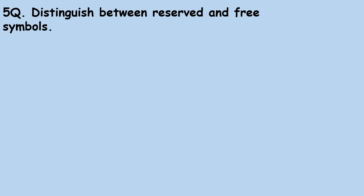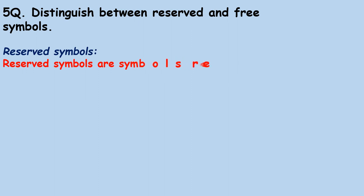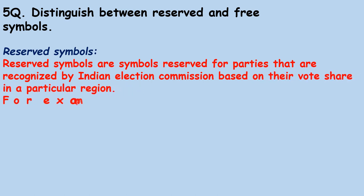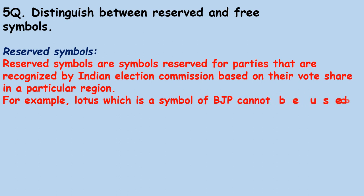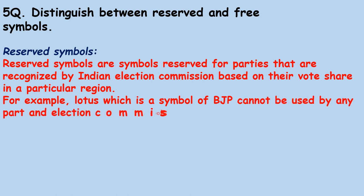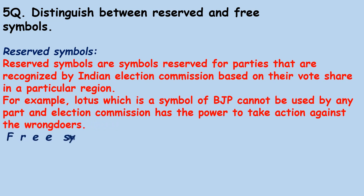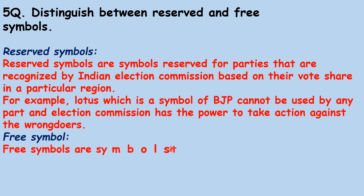Distinguish between reserved and free symbols. Reserved symbols are symbols reserved for parties that are recognized by the Indian Election Commission based on their vote share in a particular region. For example, the Lotus, which is the symbol of the BJP, cannot be used by any other party, and the Election Commission has the power to take action against wrongdoers.